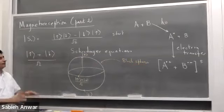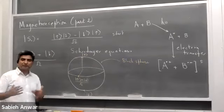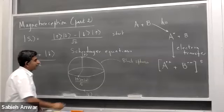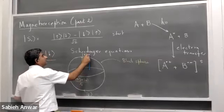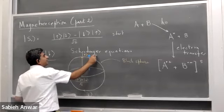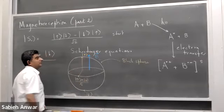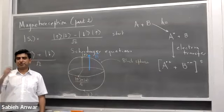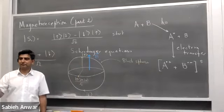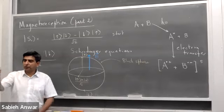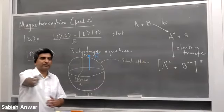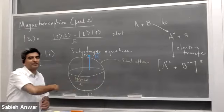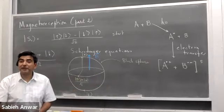Suppose I place a superposition of spin-up and spin-down in a magnetic field B₀ pointing upward. Under the impact of this magnetic field, this quantum state is going to evolve and change in time. If the quantum state starts pointing towards you on the Bloch sphere, it's going to precess — rotate around the axis — and as it rotates, the quantum state changes and evolves with time.